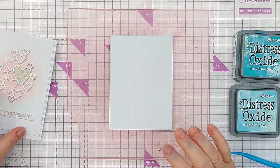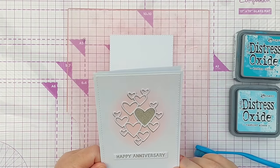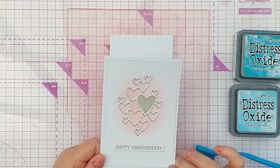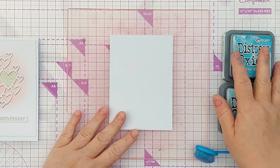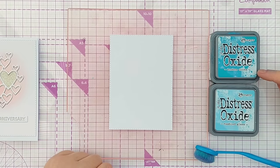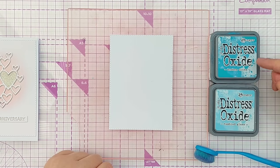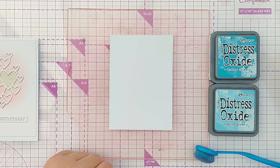So we're going to start with our inking. For this card I used saltwater taffy and tattered rose which are very pale pinky colors, but for this card I'm going to go broken china and tumbled glass. This is a greeny blue or a bluey green and this is a nice blue.